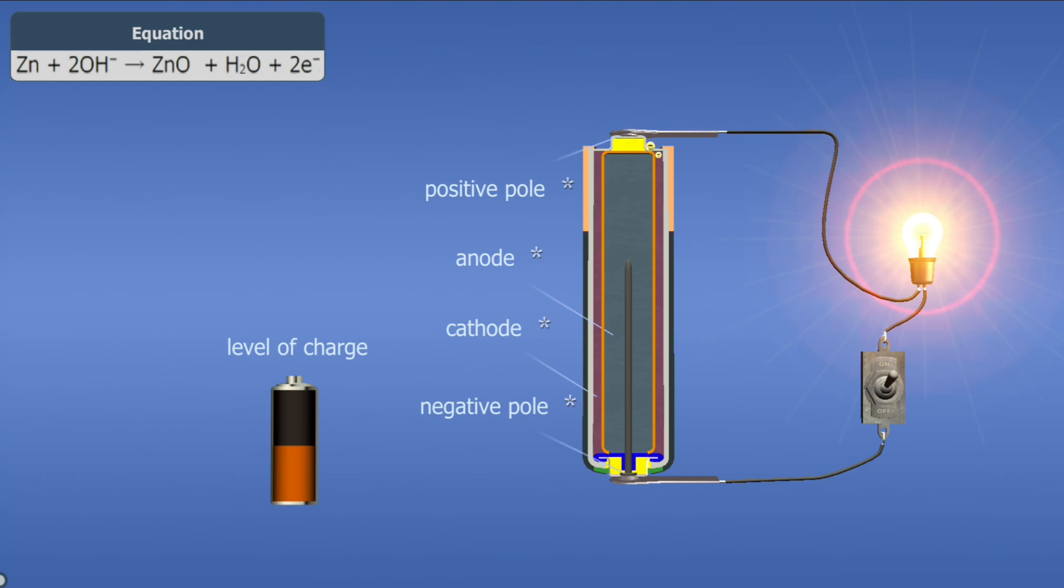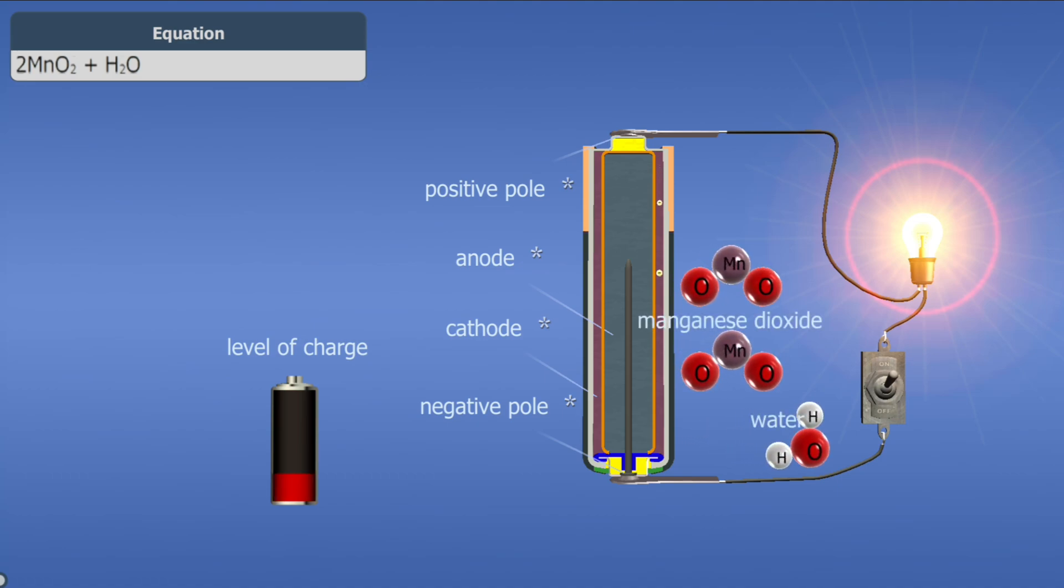The electrons pass through the circuit and enter the cathode through the positive pole. In the cathode, the electrons, manganese dioxide and water, form manganese 3 oxide and hydroxide ions.